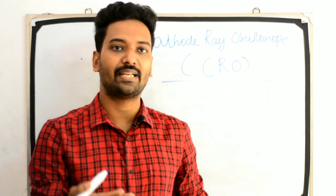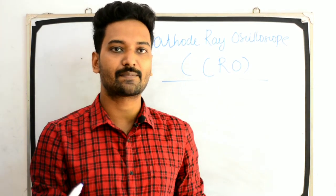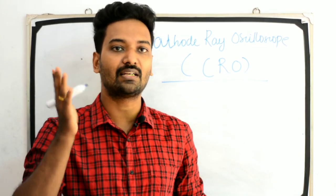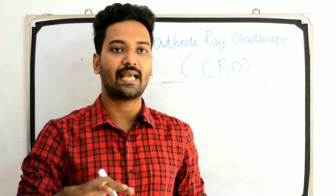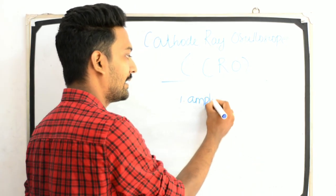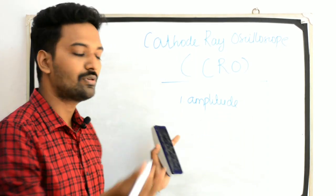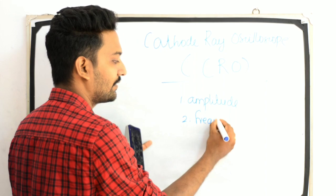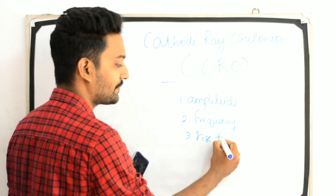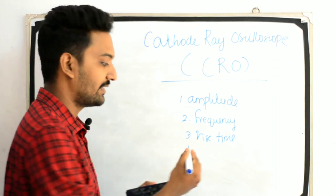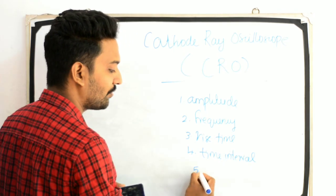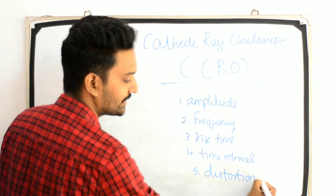An oscilloscope is a type of electronic test instrument that graphically displays varying signal voltages, usually as a two-dimensional plot of one or more signals as a function of time. The waveform can then be analyzed for properties such as: amplitude, frequency, rise time, time interval, and distortion.